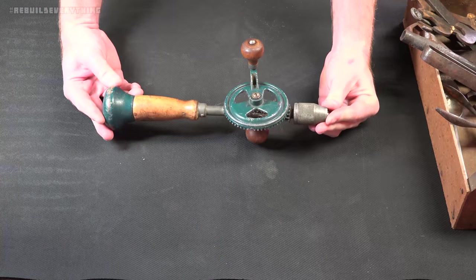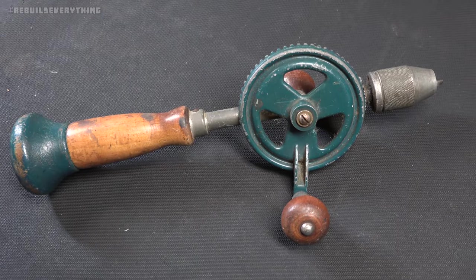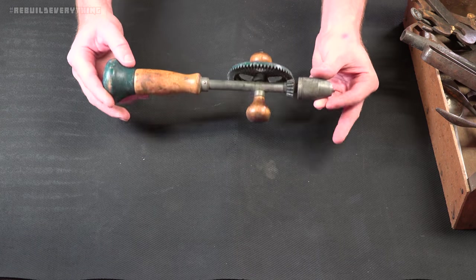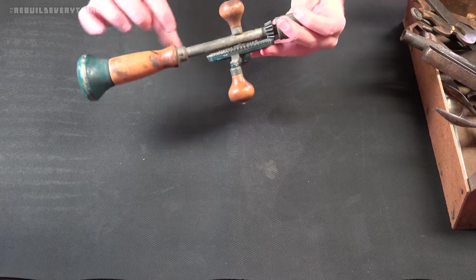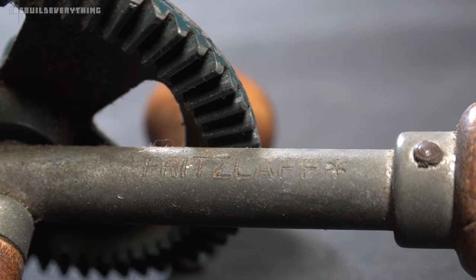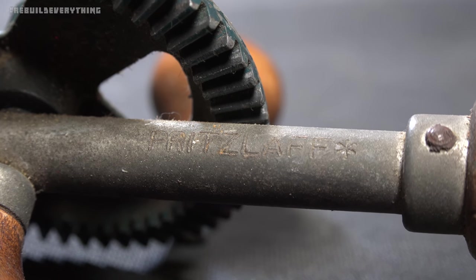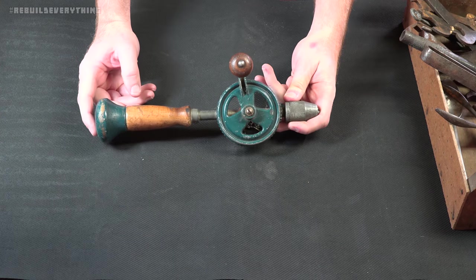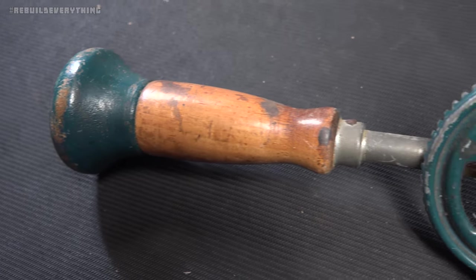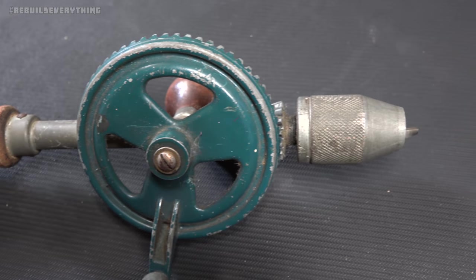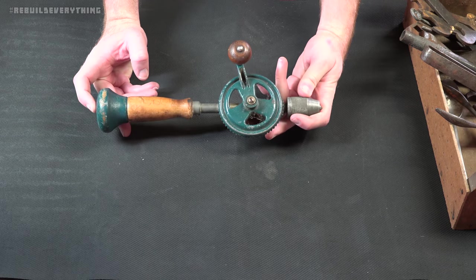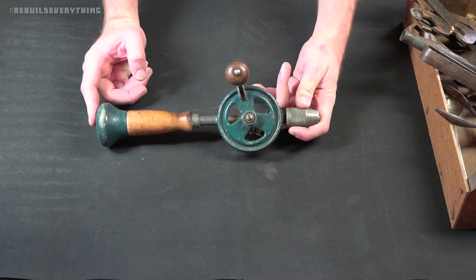Now let's set this one to the side and take a look at the older one. This guy here is a Pritzlaff, P-R-I-T-Z-L-A-F-F. At first I couldn't identify it. Under some grime on the neck here you can see it's stamped right in there, says Pritzlaff. That's the only indication of a brand or anything on this.